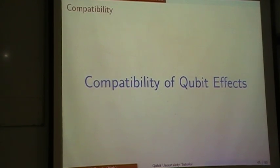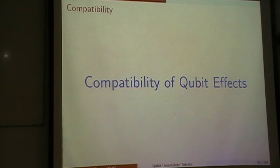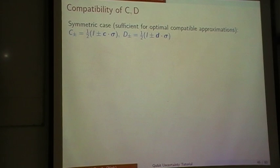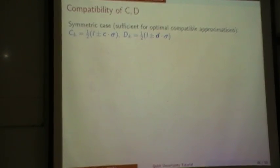Now moving on to the task: solving the problem of finding optimal joint approximate measurements of two incompatible quantities A and B. First I have to talk about the compatibility of two observables, which I need as the approximators. I was planning to give you all the proofs in detail, because I'd like to convince you that nowadays it's a matter of maybe two to three hours of lecture time in a course on quantum mechanics or foundations of quantum mechanics for undergraduates that you could easily teach all this stuff, at least for qubits.